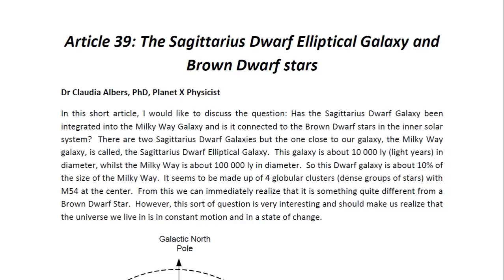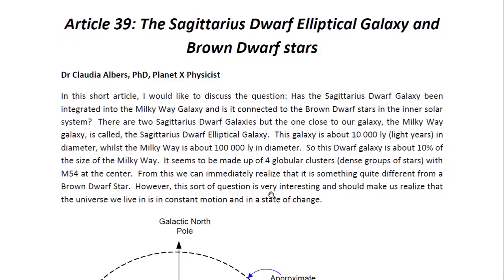I wrote a short article in answer to the question: has the Sagittarius Dwarf Galaxy been integrated into the Milky Way Galaxy, and is it connected to the Brown Dwarf Stars in the inner solar system? Now there are two Sagittarius Dwarf Galaxies, but the one closest to the Milky Way is called the Sagittarius Dwarf Elliptical Galaxy. It is 10,000 light-years in diameter, whilst the Milky Way is 100,000 light-years in diameter — so it's only about 10% the size of the Milky Way.